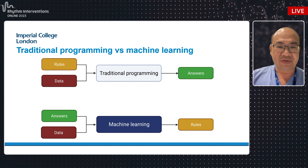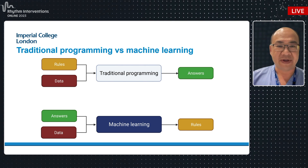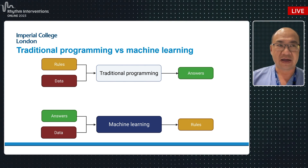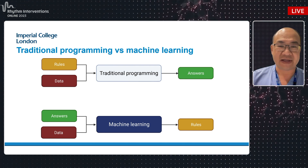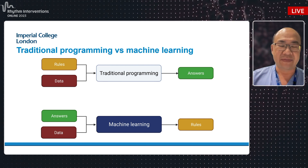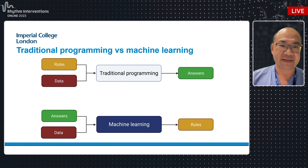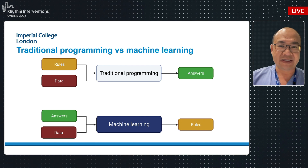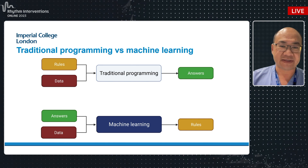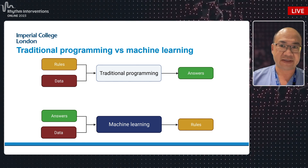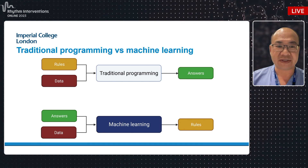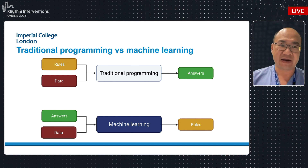There's a difference between machine learning and traditional programming. In traditional programming, we program the rules — we tell the program to measure the QRS, check if it's broad or narrow, high risk or low risk, and it comes up with answers. With machine learning, this flips the paradigm on its head. Instead, we feed lots of data with answers and the machine learns new rules to associate data to answers — new rules that we as humans were potentially previously unaware of.